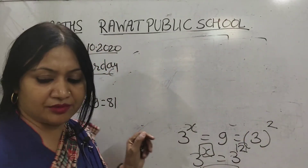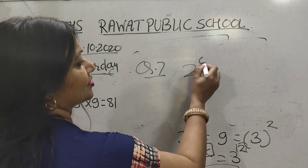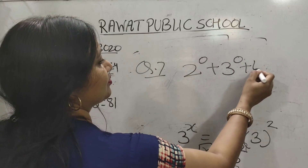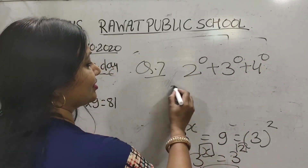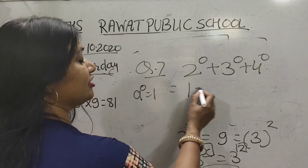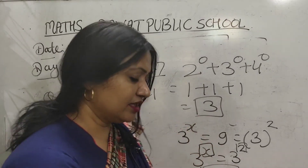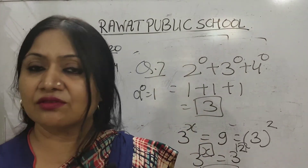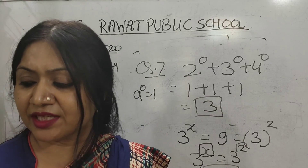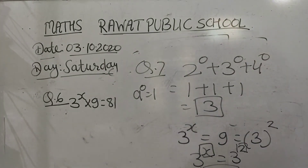One more question: 2^0 + 3^0 + 4^0. Any base raised to power zero equals 1, so 2^0 = 1, plus 1, plus 1 equals 3. These simple questions are easy — practice them always. All these laws of exponents you will use in next classes — whether class 9 or class 10.